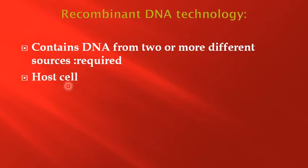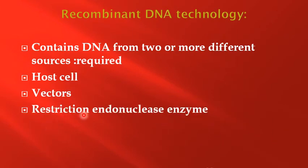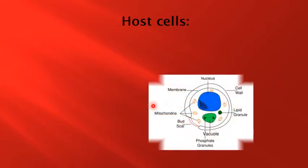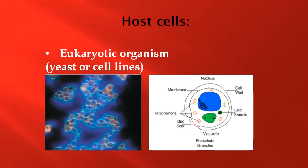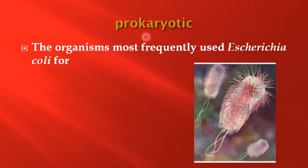The requirements for recombinant DNA technology include: first, host cells; second, vectors; and third, restriction endonuclease enzymes. There are two types of host cells: eukaryotic and prokaryotic. Eukaryotic examples include yeast and cell lines. The most frequently used prokaryotic organism for recombinant DNA technology is E. coli bacteria, because bacteria are haploid and reproduce asexually by binary fission.